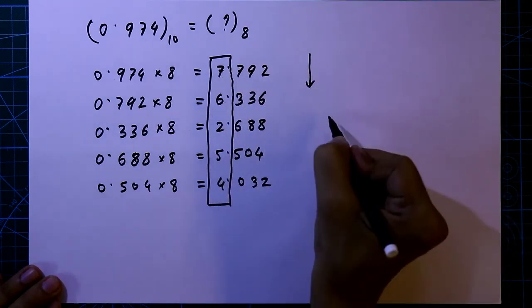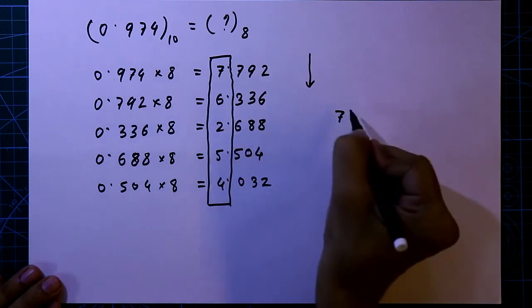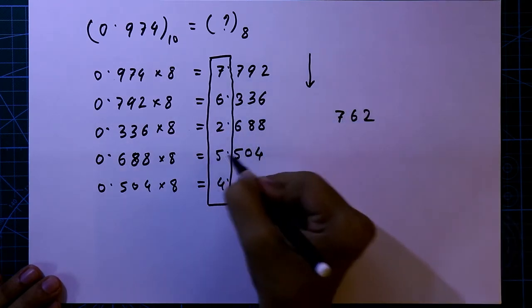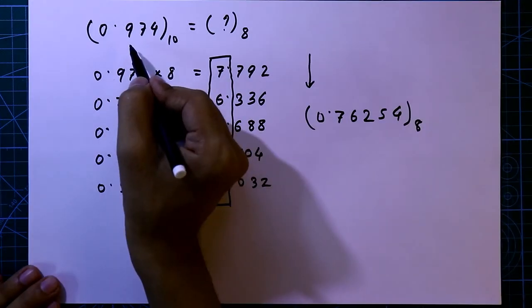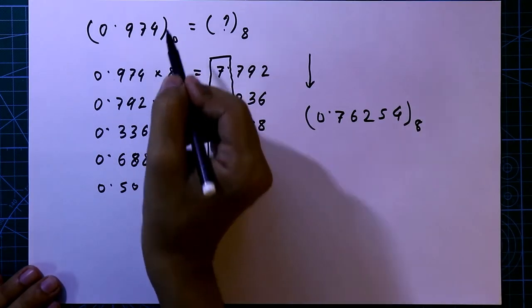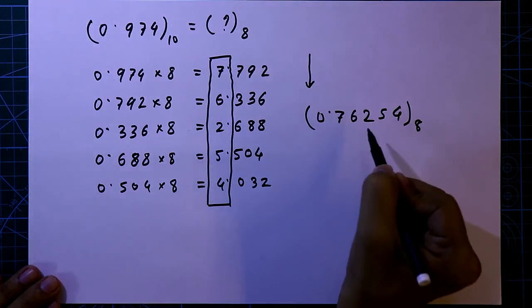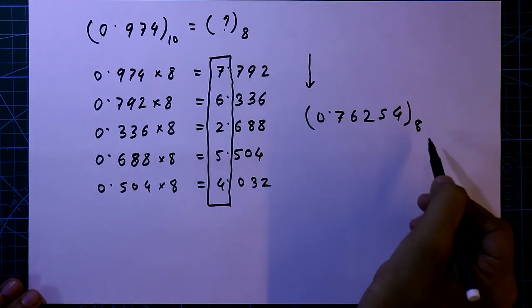So it is 7, 6, 2, 5 and 4. 0.974 is equivalent to 0.76254 in octal number system.